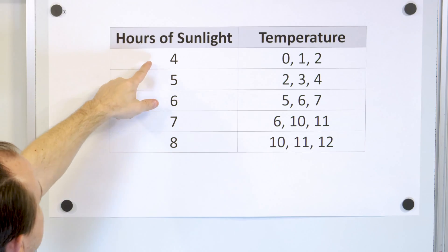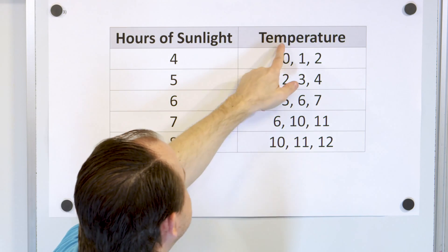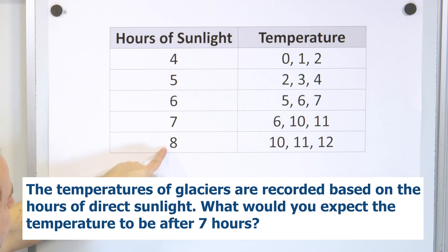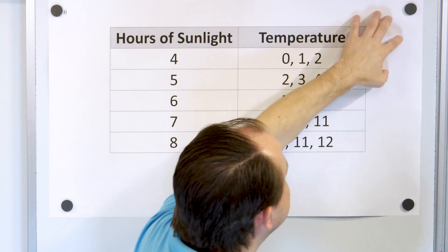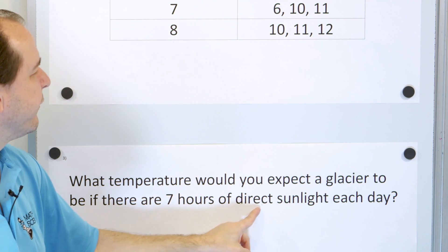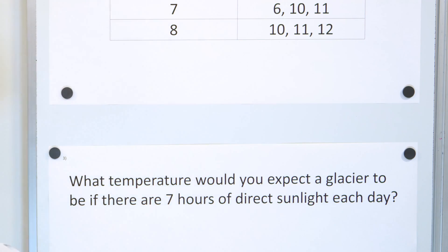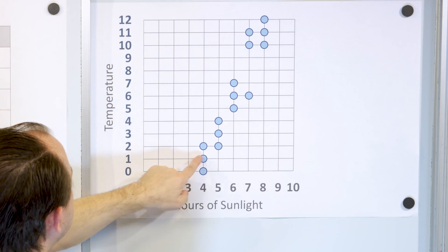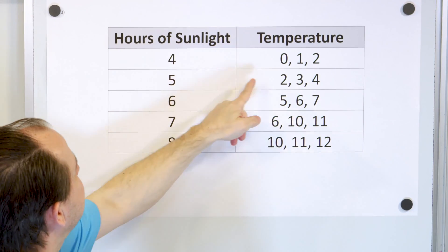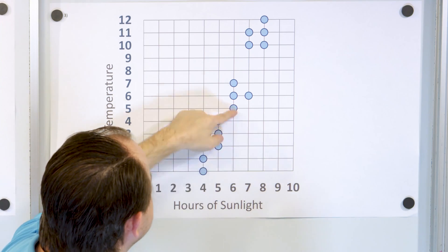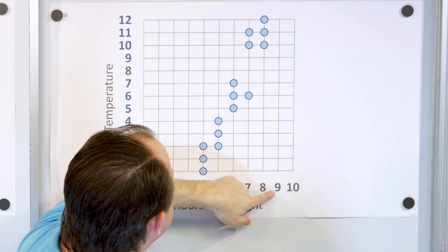Here's our last problem. We're recording the number of hours of sunlight hitting a glacier and the temperature of the glacier. With only four hours of sunlight, the three different glaciers have pretty low temperatures, but as sunlight increases, temperature is generally higher. The question is: what temperature would you expect a glacier to be with seven hours of direct sunlight each day? Let's draw a scatterplot — at four hours we have temperatures of 0, 1, and 2; at five hours we have 2, 3, and 4.